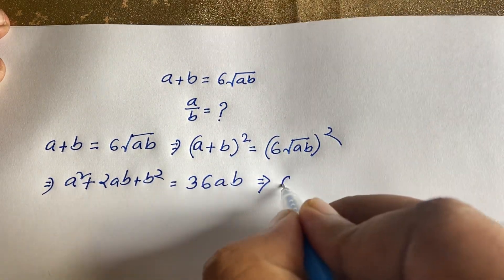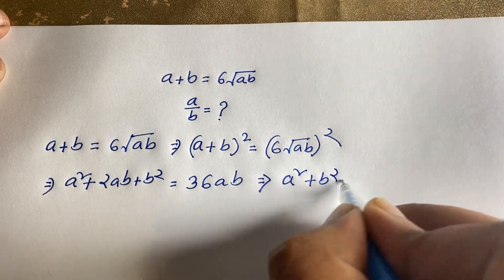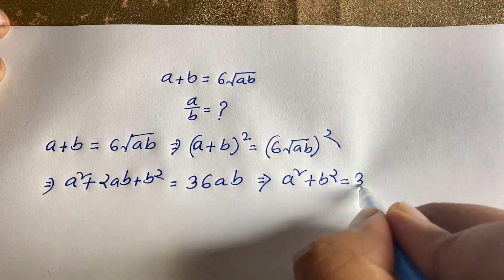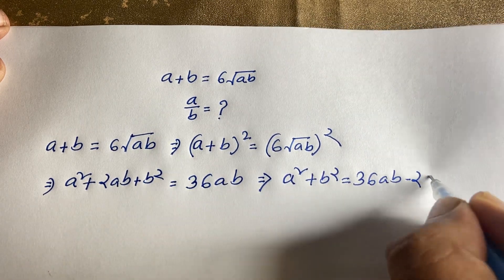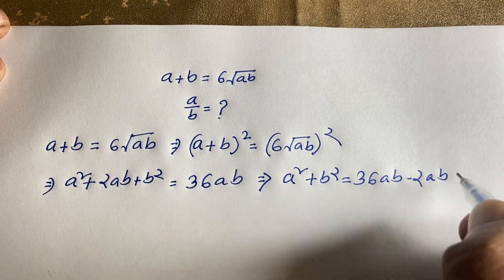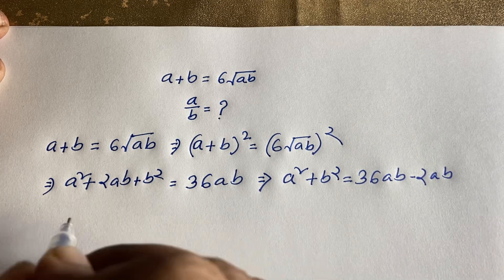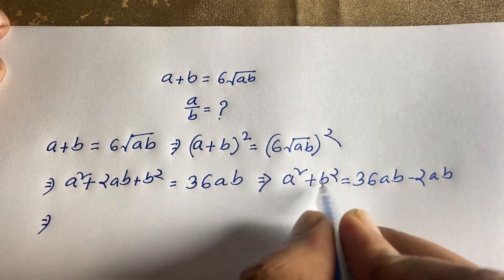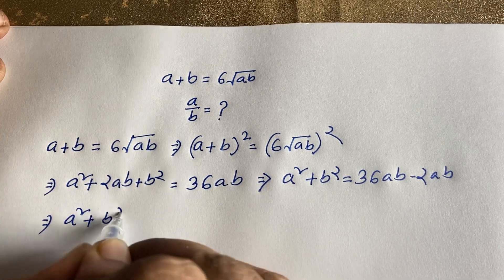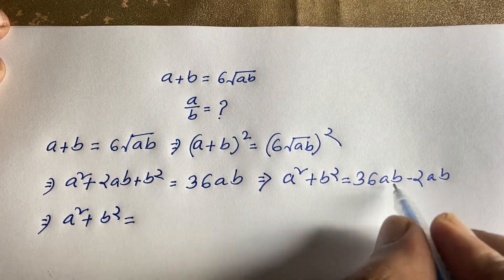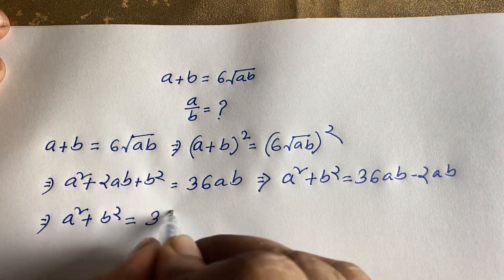Rearranging, a² + b² is equal to 36ab minus 2ab, which gives us 34ab.